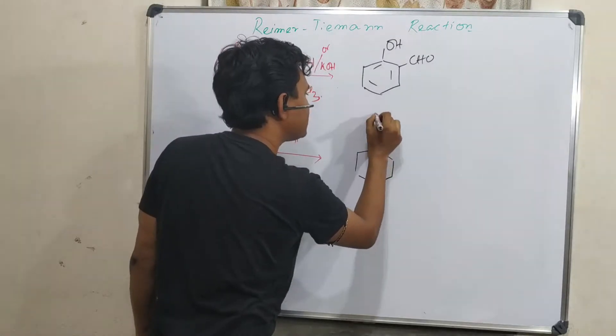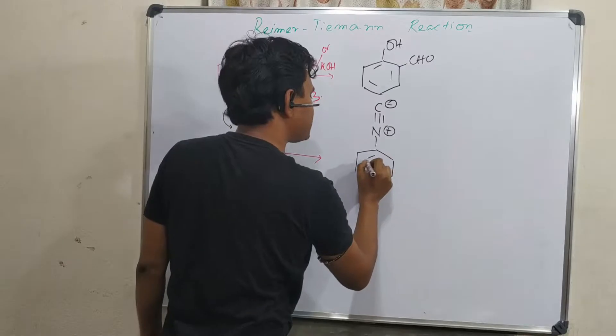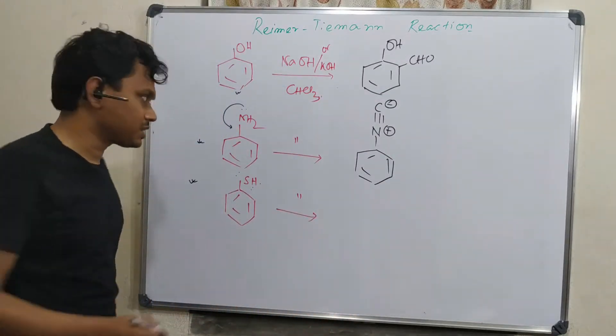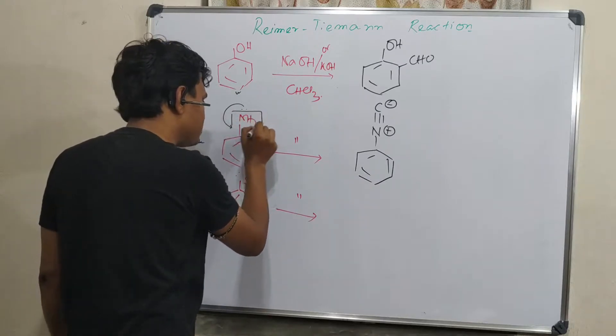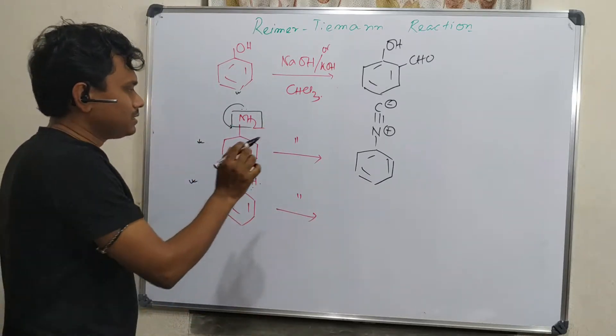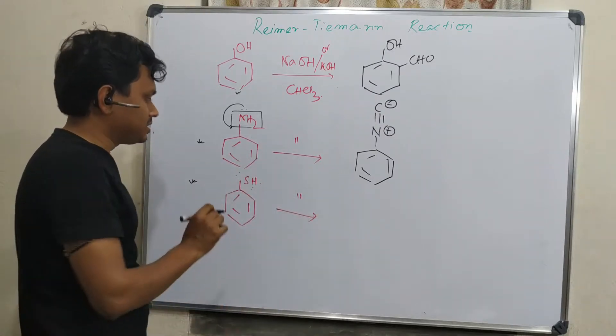This N=C=O. This reaction is known as Carbylamine reaction and this is one of the detection tests for aniline. Okay, so this produces a very bad smell. I shall explain this in a different reaction, different video, complete details.